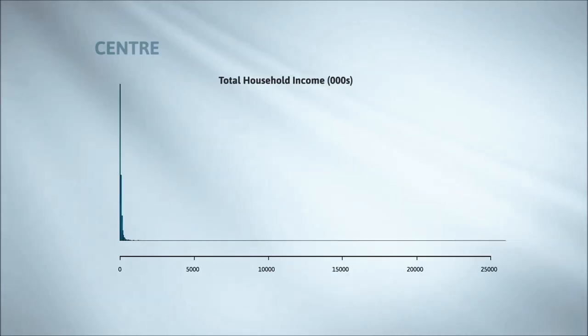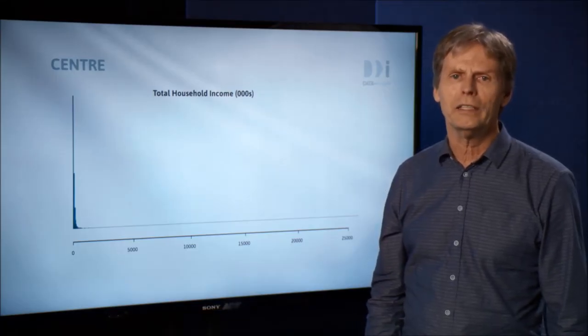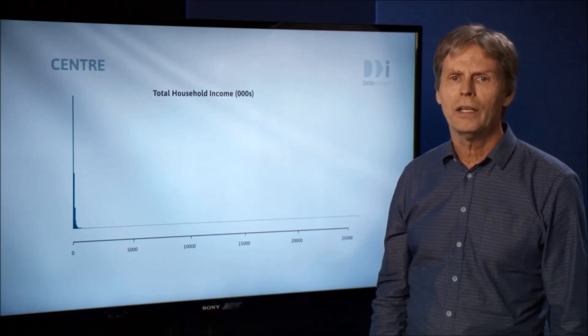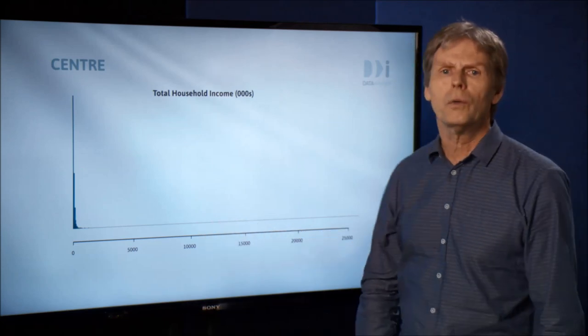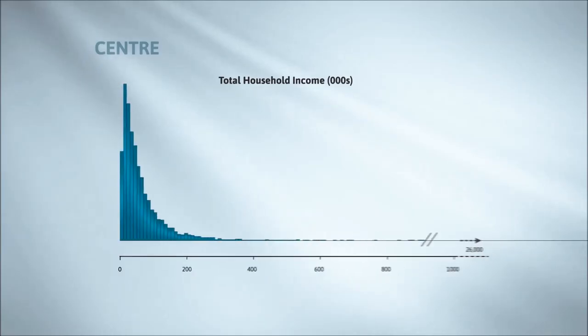This plot shows an extreme case. The shape here is enormously skewed, squashed into what almost looks like a single spike near zero. It is showing total household incomes from the 2006 US Health and Retirement Survey. Household incomes go all the way up to 26 million. Next, we'll look more closely at the data squashed into the left-hand side of this plot.